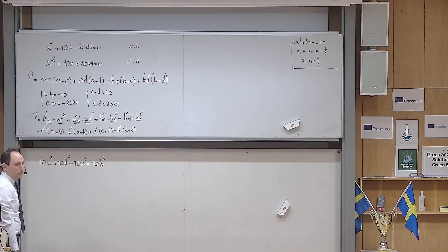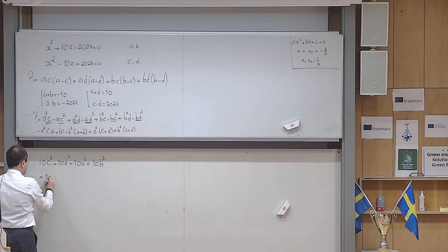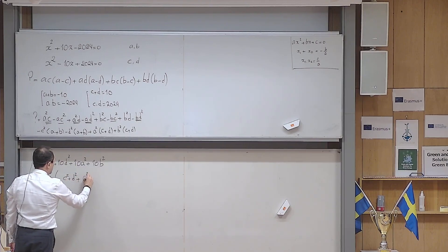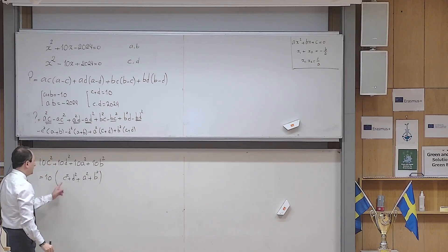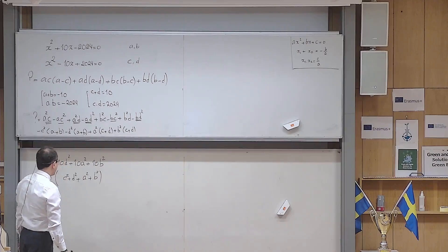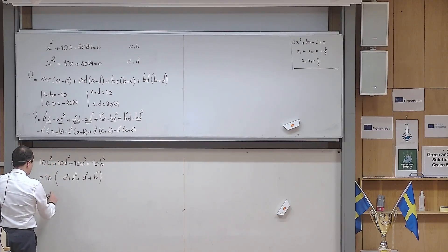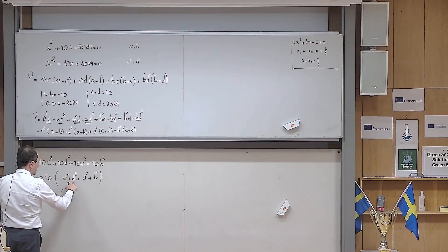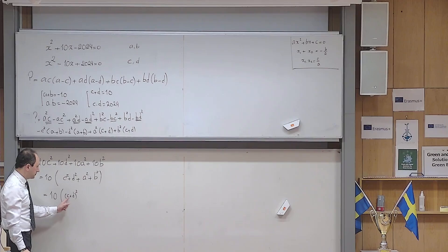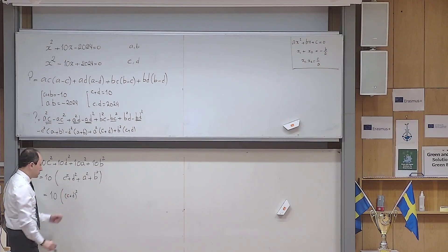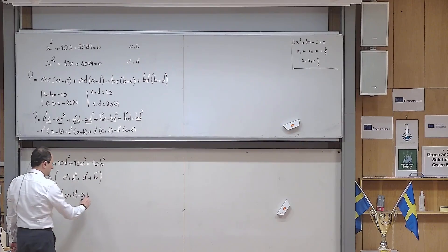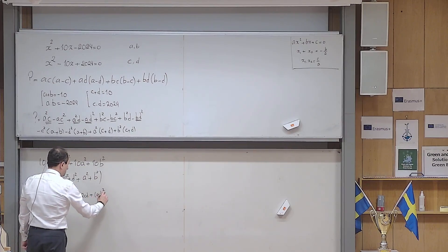It is a very simple problem now. I can take a 10 out, then here I will have c squared plus d squared, and here I will have a squared plus b squared. But I need to find c squared plus d squared and a squared plus b squared according to this information that I have. I can write 10 times, instead of c squared plus d squared, I can write c plus d totally squared, but then I will have two times the first one times the second one, which I don't have here. So to compensate, I write minus 2cd. And the same is for here, a plus b squared minus 2ab.